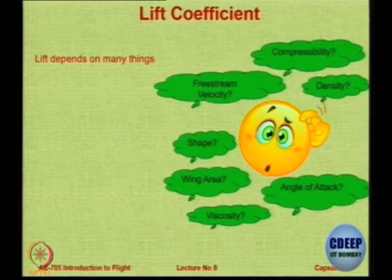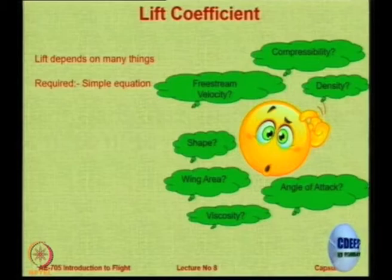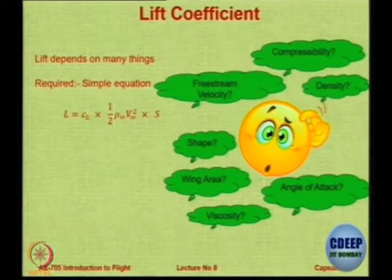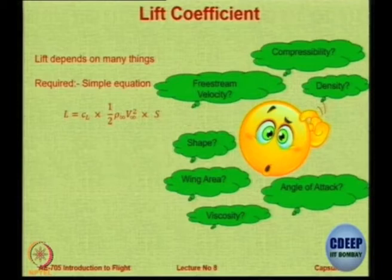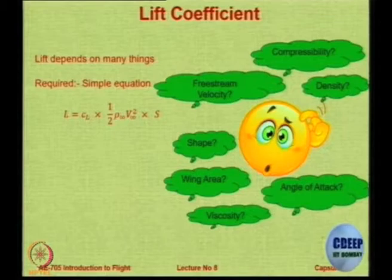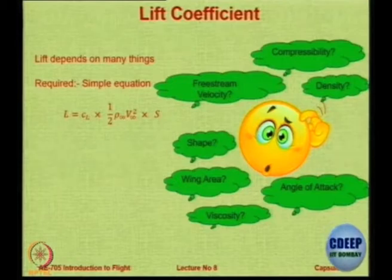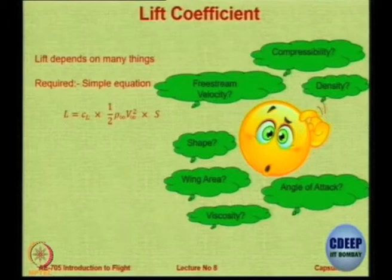To take care of all the important things, we want a simple equation that captures the essence. We have this equation which says that lift is a function of the density of the fluid, the velocity, the area, and a coefficient called CL — the lift coefficient — which relates the numerical value of lift with parameters like area, velocity, and density that directly affect the amount of lift created.